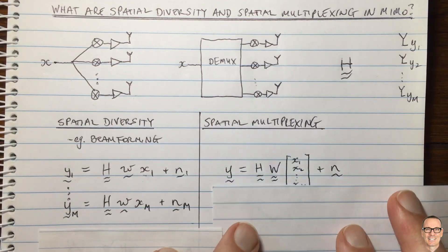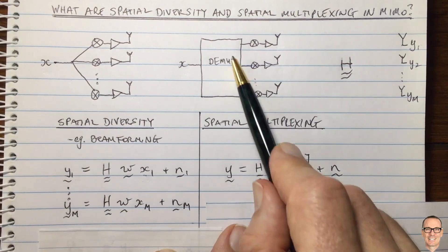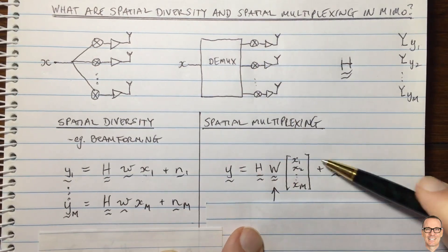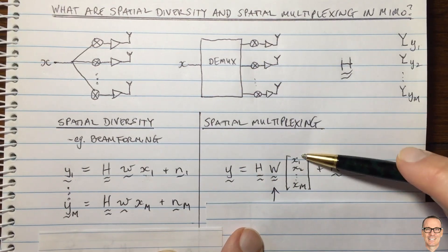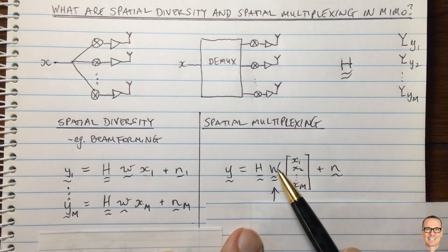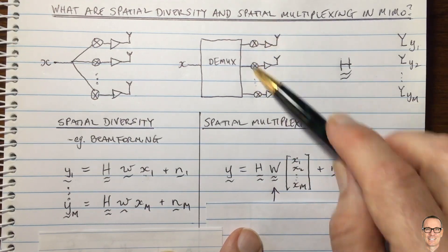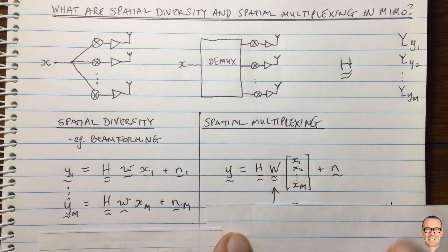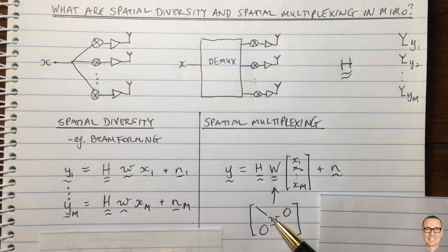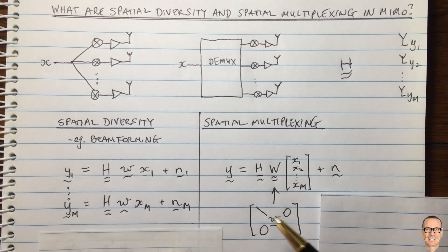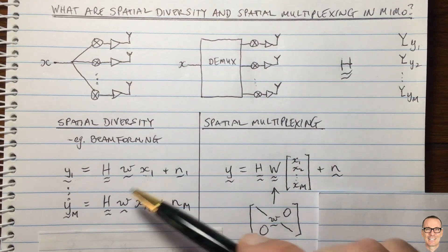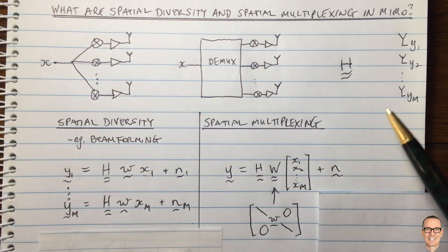In contrast, spatial multiplexing, you send them all over the same period, but in parallel. So now all of the data symbols can be stacked into a vector, multiplied by a matrix for these gains here, multiplied by the matrix channel, where this matrix of gains is now diagonal with zeros off the diagonal. You can confirm that for yourself.